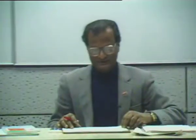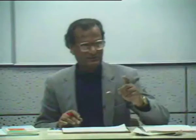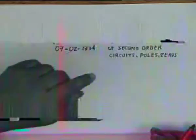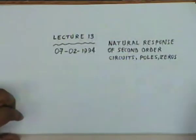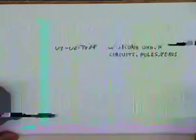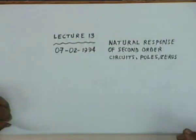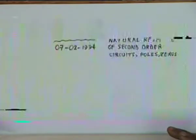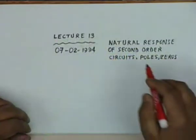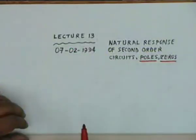This is the thirteenth lecture. We shall continue the discussion on that problem in one of the tutorial classes. Thirteenth lecture today is 7th February and we discuss natural response of second order circuits, and if time permits we shall discuss poles and zeros.